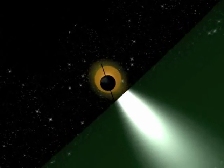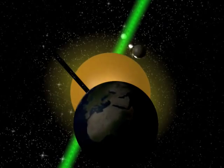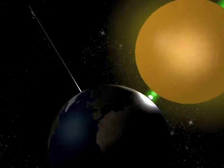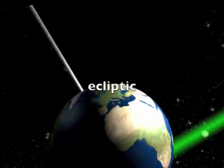From Earth, we see this plane as an imaginary line that all the planets and the sun seem to follow through the sky. We call this line the ecliptic.